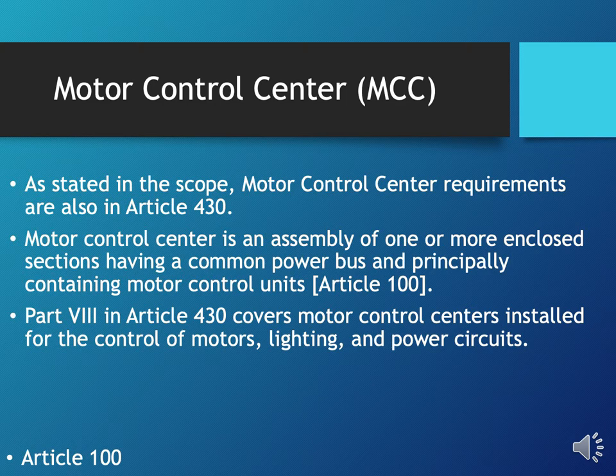When a term or word appears in more than one article in the code book, its definition is found in Article 100. Motor control center is defined in Article 100 as an assembly of one or more enclosed sections having a common power bus and principally containing motor control units. The requirements for motor control centers are in Part 8 of Article 430.